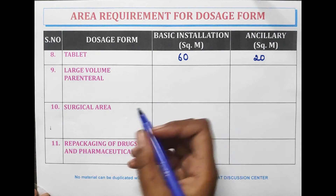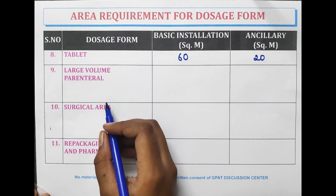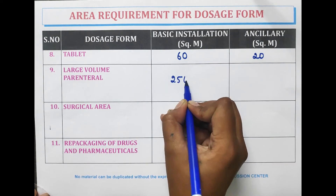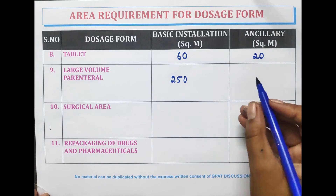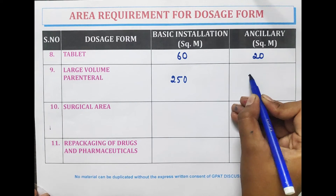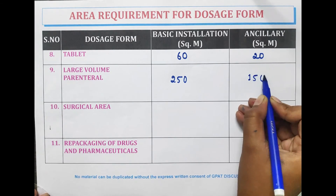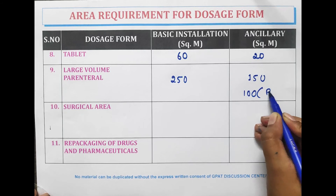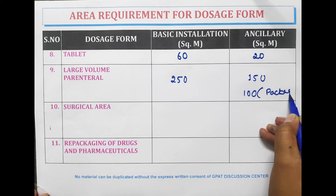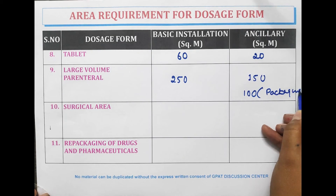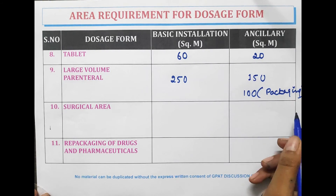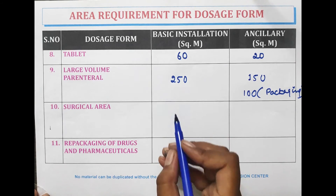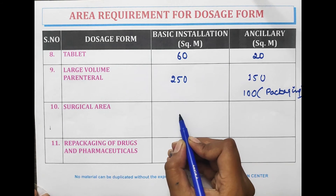For large volume parenterals, 250 meter square area for basic installation is required. For ancillary area it is 150 meter square, and 100 meter square in the case of packaging. If packaging is also done in that area, then 150 meter square area is required.